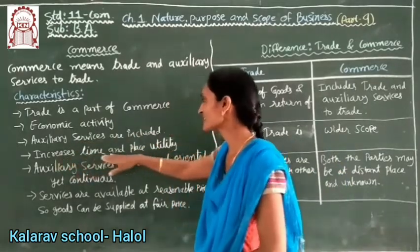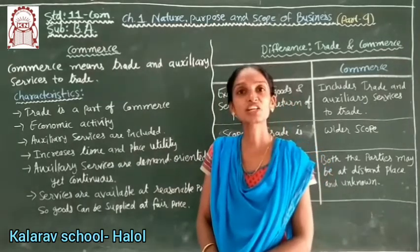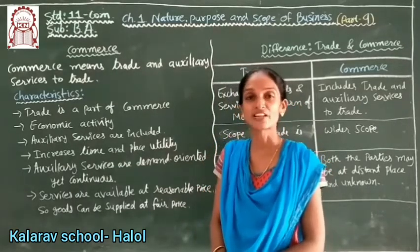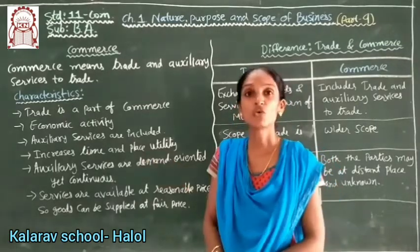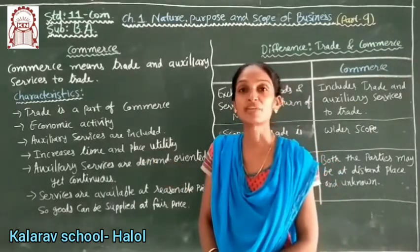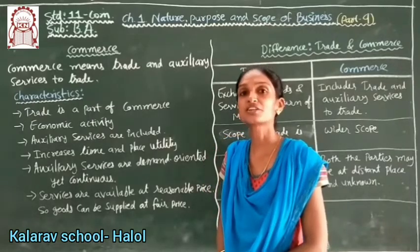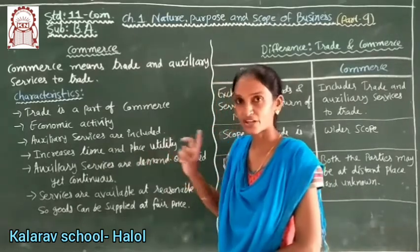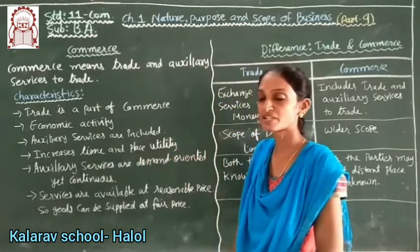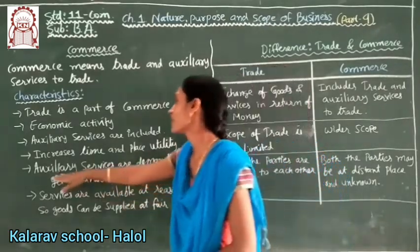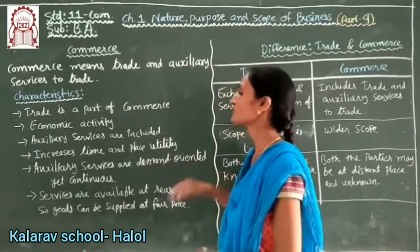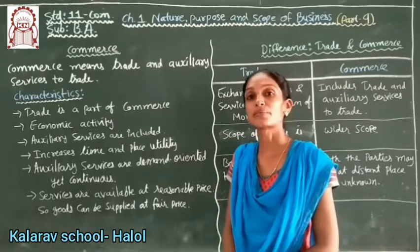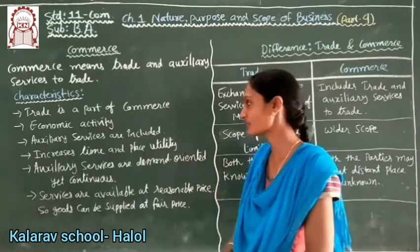Commerce also increases time and place utility. Time utility means that goods reach where they are needed at the right time. Place utility means placing goods in the market so customers can access the product. These are two very important aspects. Auxiliary services are also demand-oriented — they are created and provided whenever there is a need.